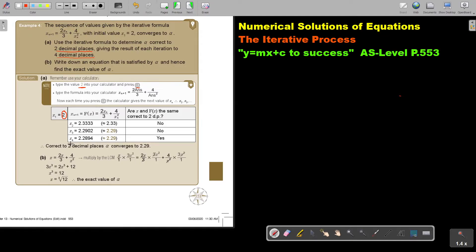And then I press equal again, I approximate to 4 decimal, then 2 decimal, and now it's the same, yes. And then I take that answer and say, correct to 2 decimal places, alpha converges to 2.29.